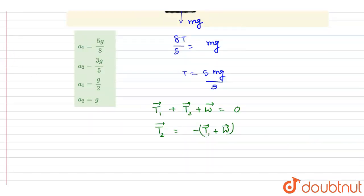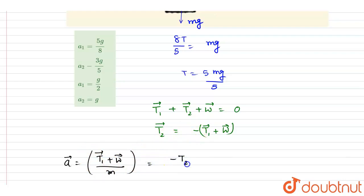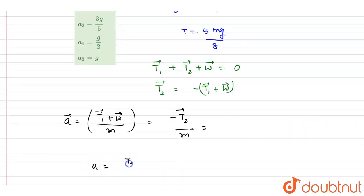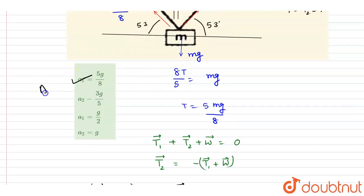So the acceleration equals (T1 vector + W vector) divided by mass. Since T1 + W has the same magnitude as T2, the magnitude of acceleration is T2/m, which is 5mg/8 divided by m, giving 5g/8. This is the answer, and you can check for the options — it is option A. Thank you.